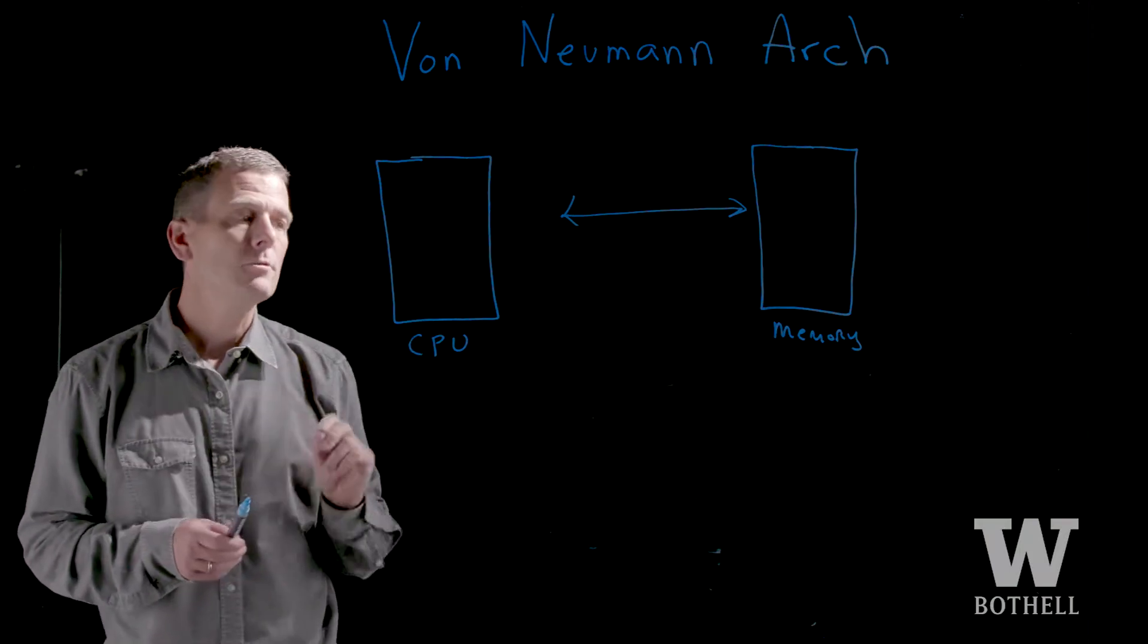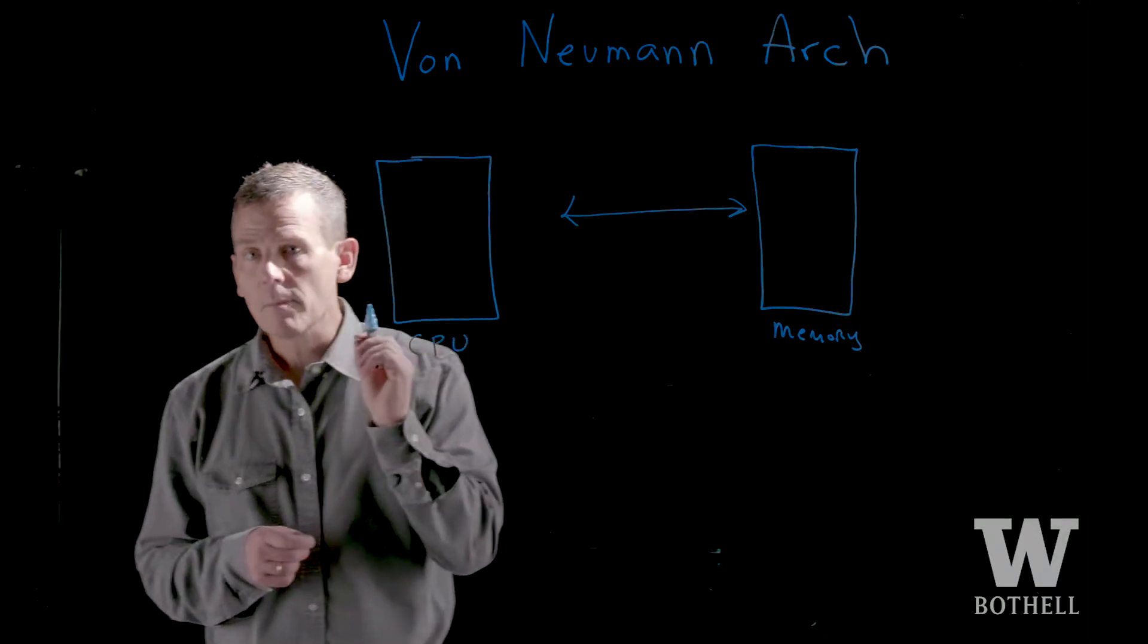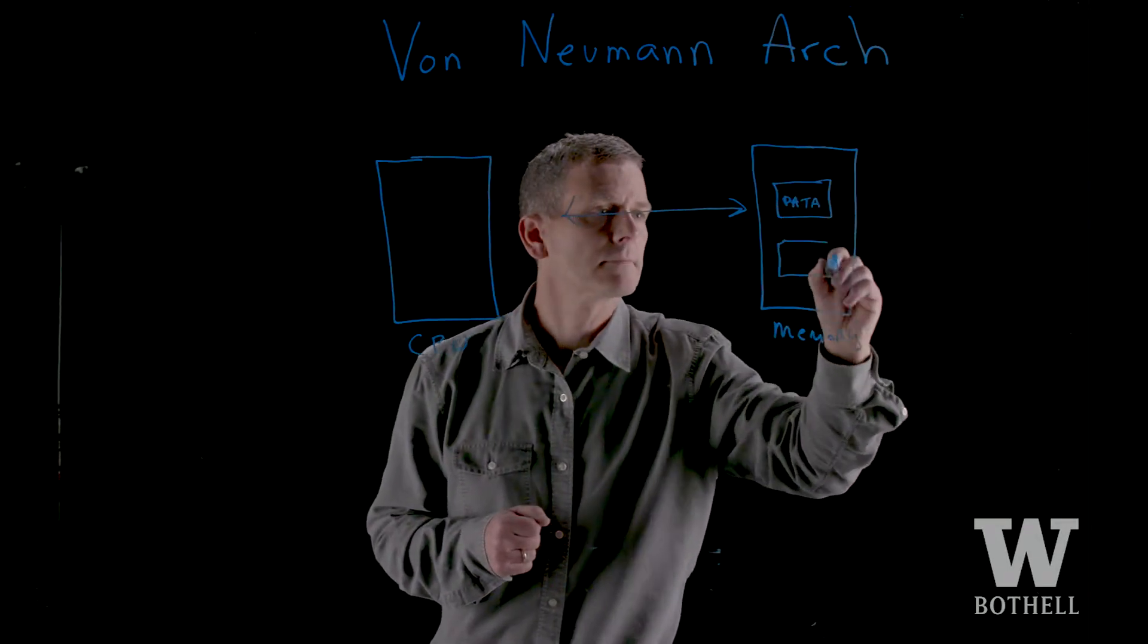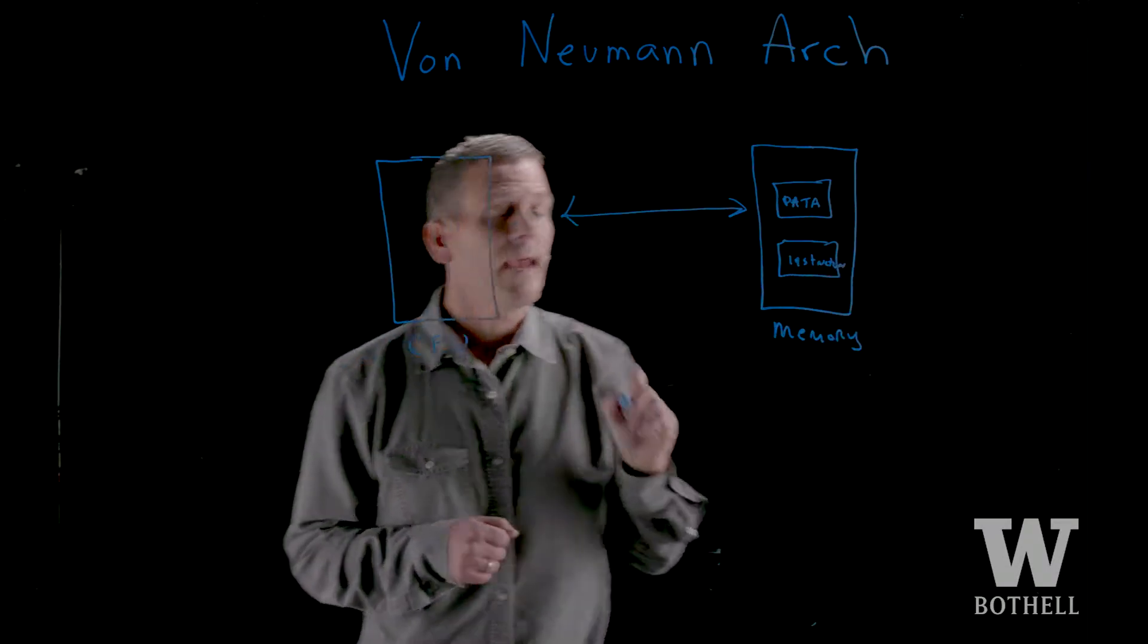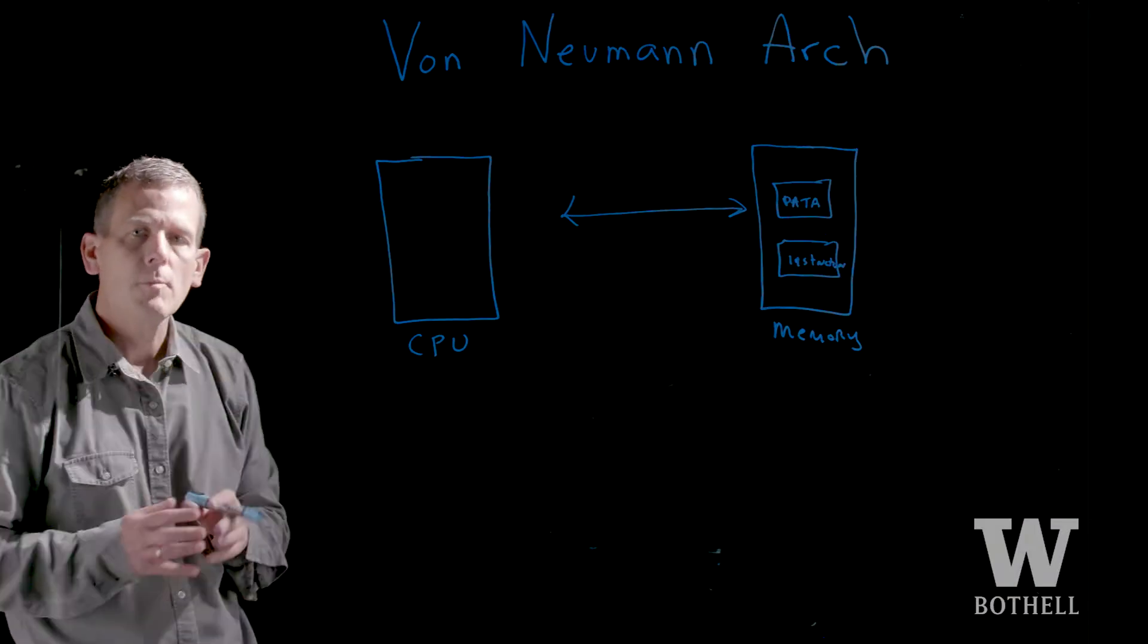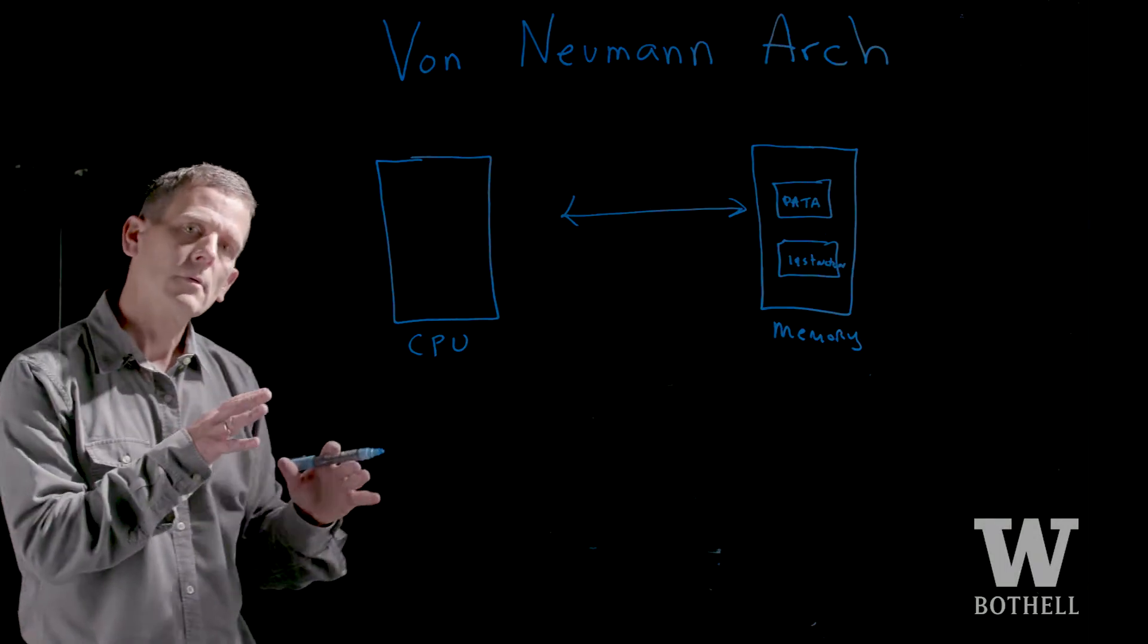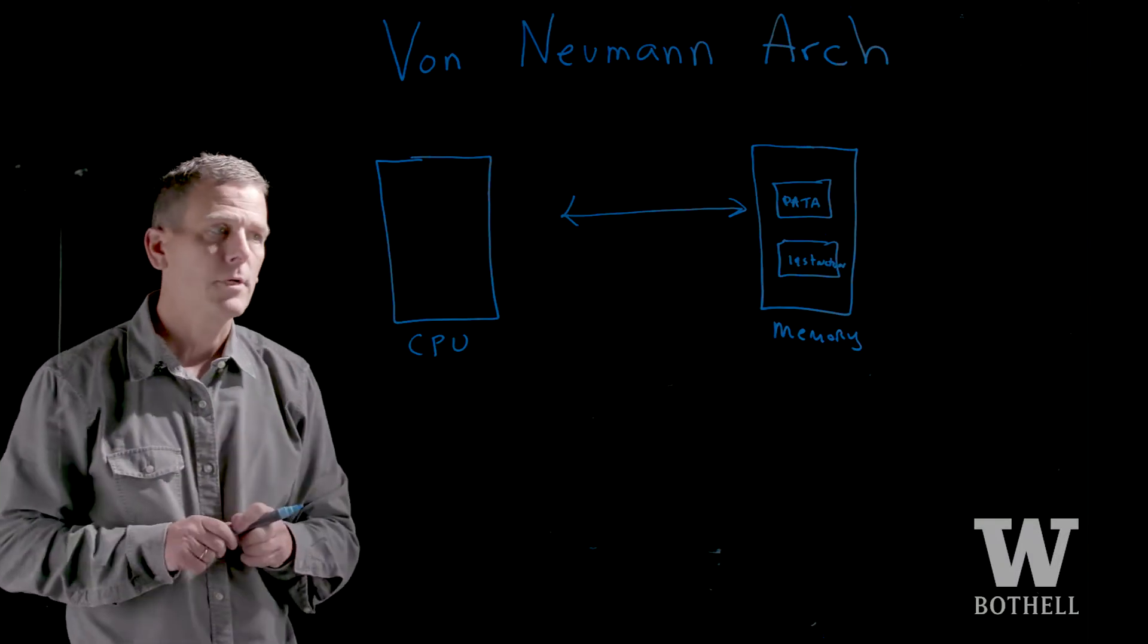The fundamental difference between the von Neumann architecture and architectures before that is within the memory itself, which is volatile, you have both data and instructions. At the time, this was revolutionary. Before this, the instructions were outside the computer. If you looked at the earlier versions of, let's say, Colossus by Turing, the program was outside the computer itself and controlled the computer while the data was kept in the memory itself.